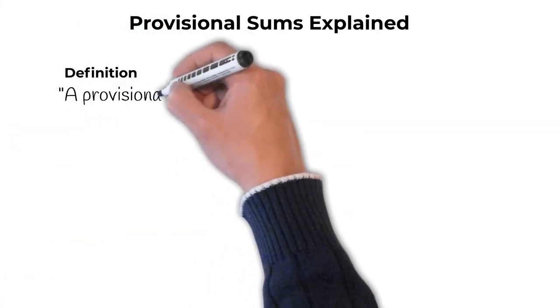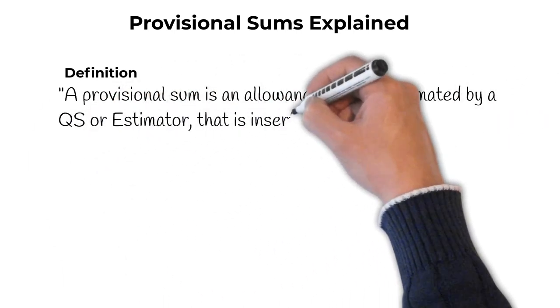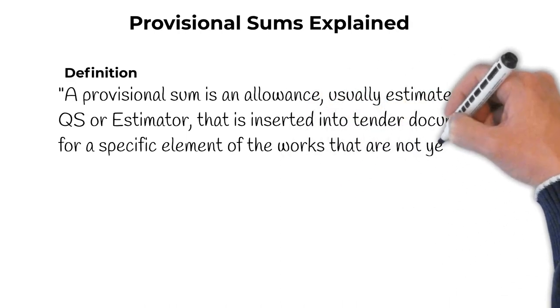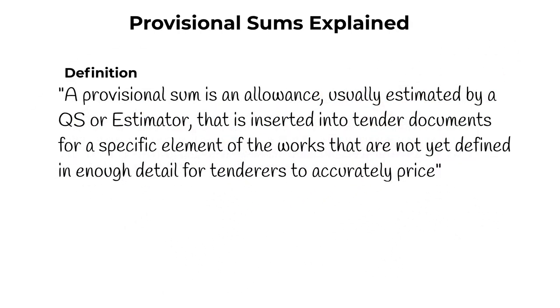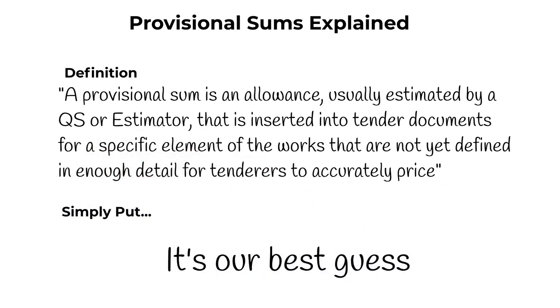A provisional sum is an allowance usually estimated by a QS or estimator that is inserted into the tender documents for a specific element of the works that are not yet defined in enough detail for tenderers to accurately price. In other words, it's our best guess and is usually included as a round figure.